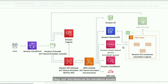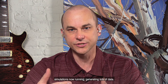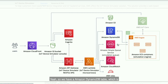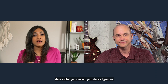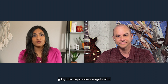The simulations are actually run on Amazon Elastic containers, and in the back end it's using AWS Fargate, which is a serverless compute engine to manage and run your containers. With lots of simulations now running and generating lots of data, we have an Amazon DynamoDB table which is going to store all the data about your devices that you created, your device types, as well as all the simulations that were run. It's going to be the persistent storage for all of this information.